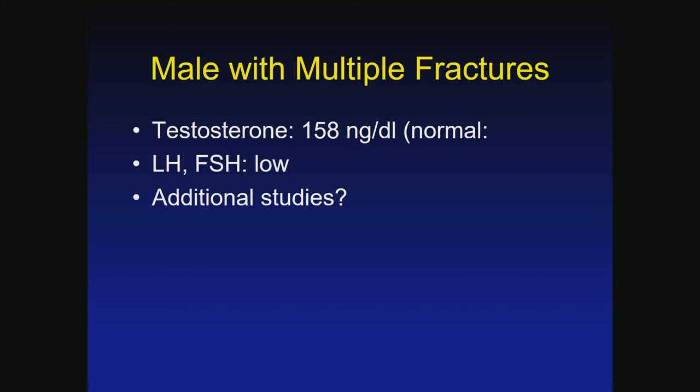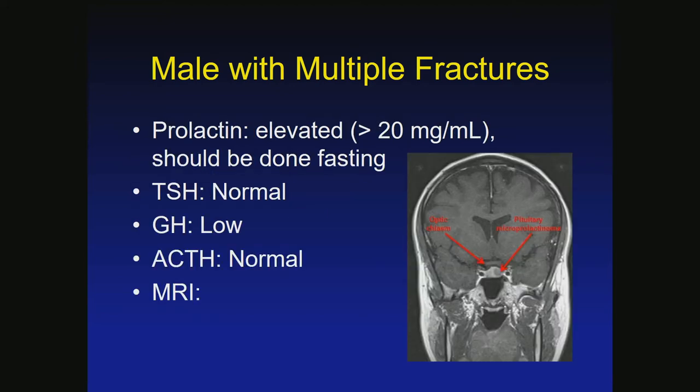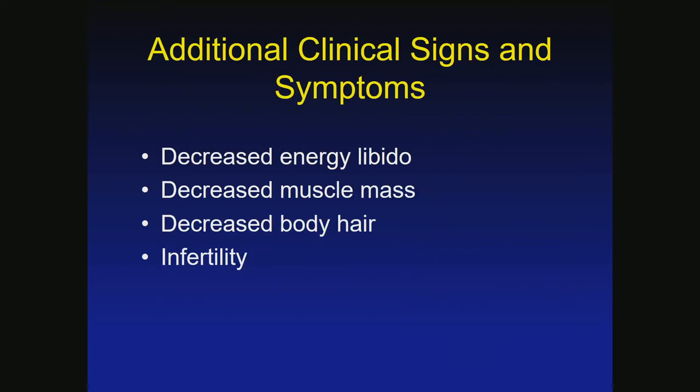When asked more specifically, he did have decreased energy, muscle mass, body hair, and a history of infertility. You can certainly ask those questions to begin with, but regardless of the answers, it's really important to get the testosterone. There's one more case, just to make the point that you can do an initial screen, have a patient doing okay, and then they stop doing okay — at which point you have to rethink whether something else is going on.